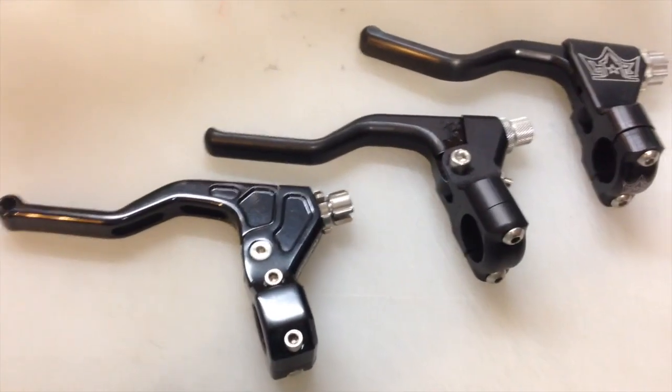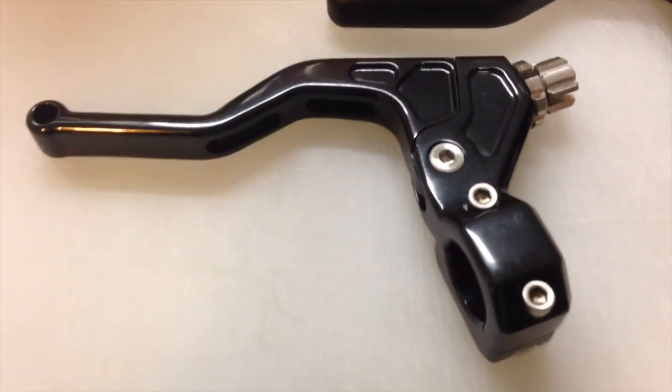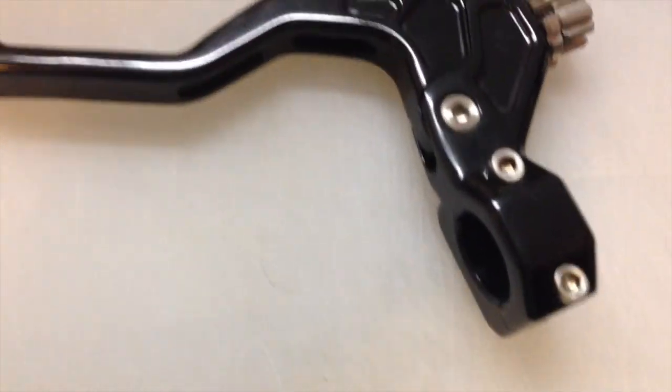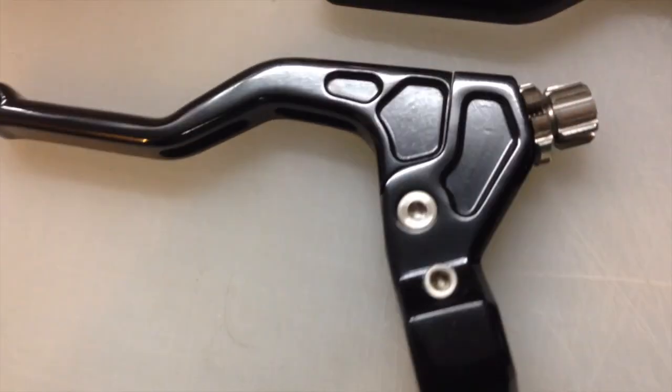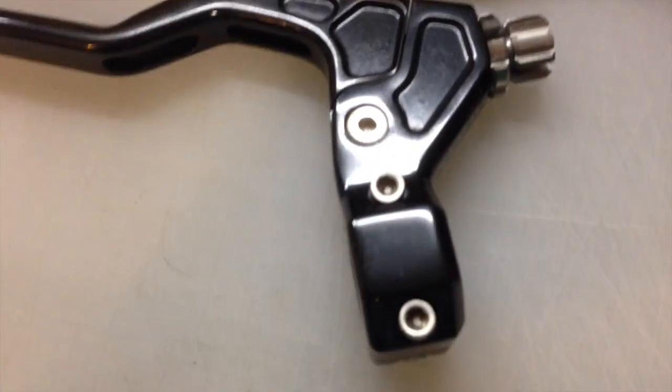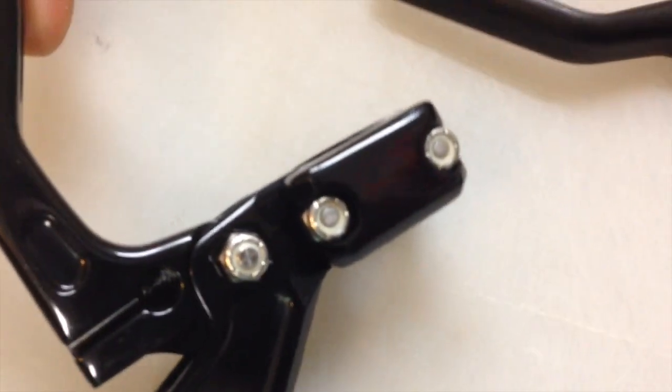All right, all three out of the package here, and here's a closer look at the Impact Tech. The finish is very shiny and really high-end looking. A stainless steel adjuster, stainless steel hardware, mounts with the one-piece perch that goes over the bar and then has the perch cap on the bottom with the captive nuts.